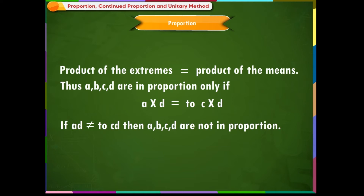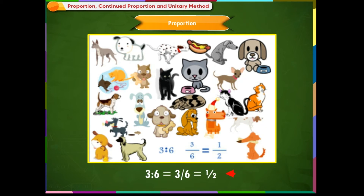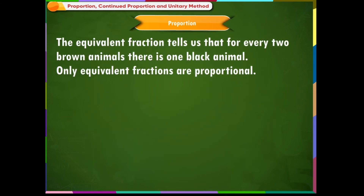You can write mathematical proportions in two ways: you can compare numbers with colons (a:b), or you can write the proportion as equivalent fractions. For example, if there are three black animals compared to six brown animals, you can write this with a colon or as an equivalent fraction. When simplified, the equivalent fraction tells us that for every two brown animals there is one black animal. Only equivalent fractions are proportional.